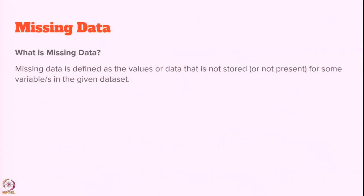What is missing data? Missing data is defined as a value or data that is not stored or present for some variables in the given dataset — that is called missing data.